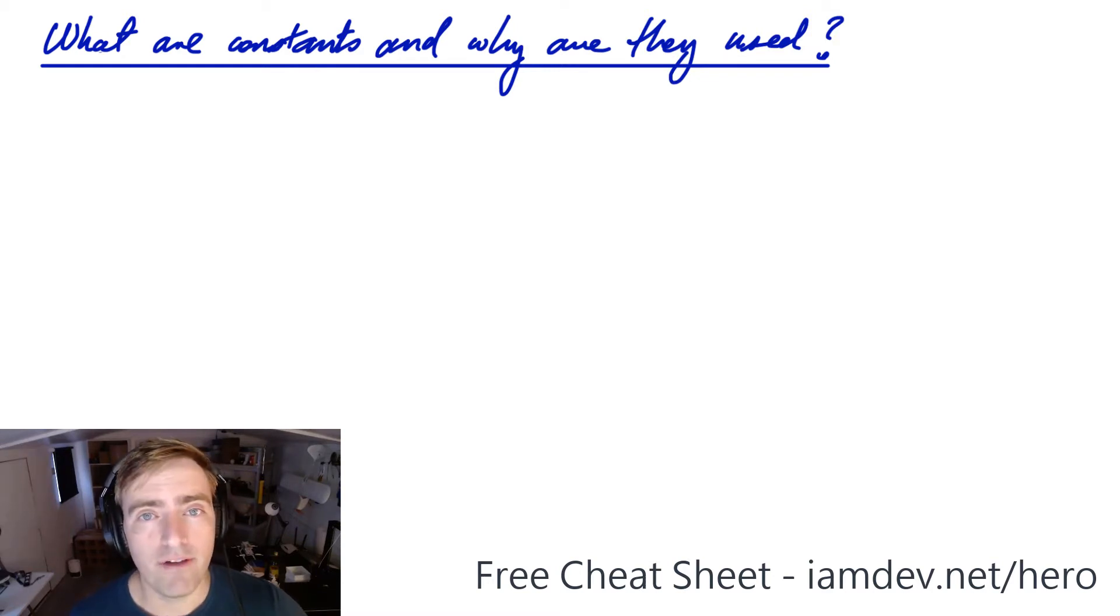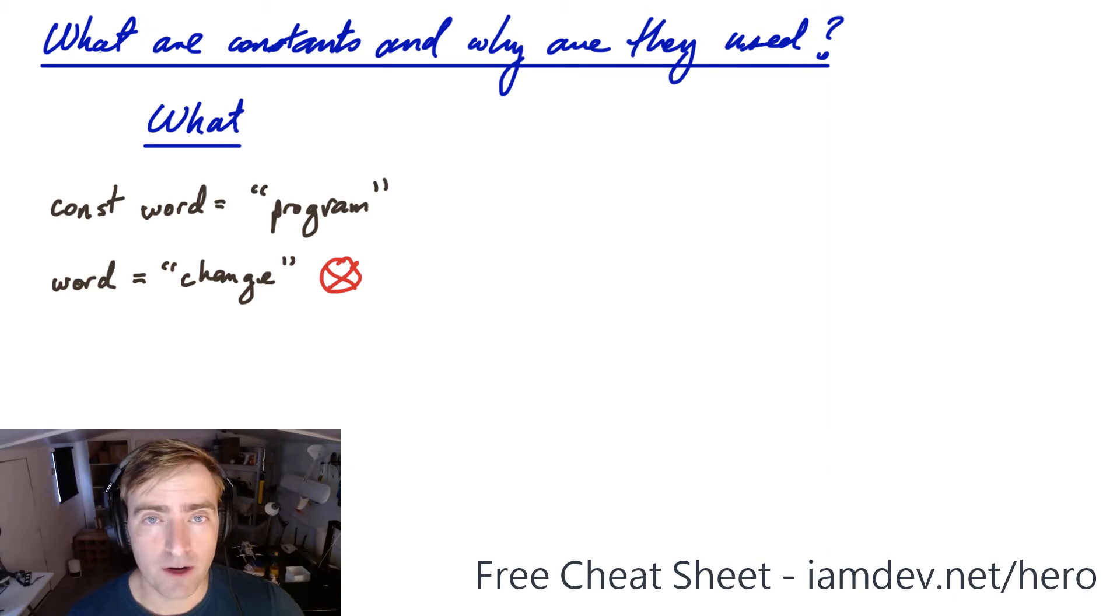So a constant is also a variable, but a constant, such as a constant called word which we put the string program into, a constant is unchangeable. So if we try to change that constant word to change, then we wouldn't be able to do it. So that's the core feature of a constant. It is unchangeable at runtime.